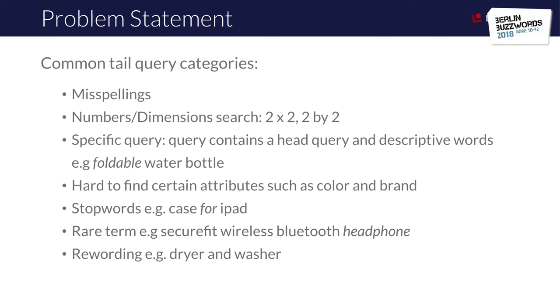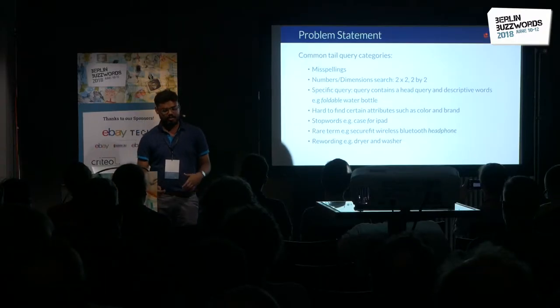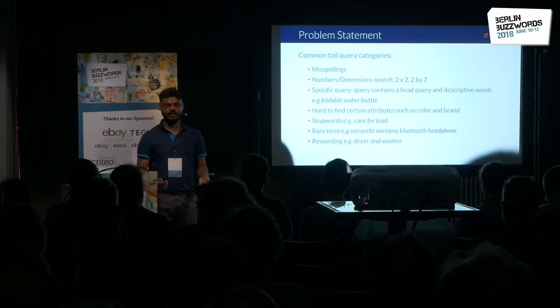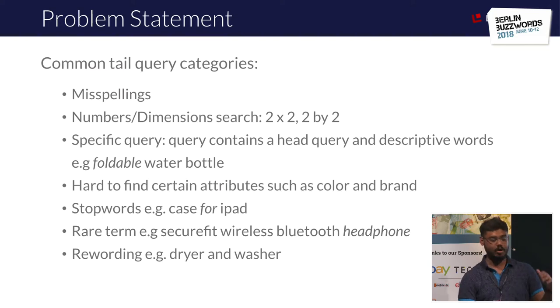Let's broadly classify poor-performing queries. First, misspellings: depending on where a user hails from and how they pronounce a word, they tend to spell it differently. Even content creators or sellers listing products on an e-commerce platform may misspell a term. Second, numbers or dimension searches: a product described as '2 x 2' may not surface when a user searches '2 by 2.' Third, popular queries with adjectives — like 'foldable water bottle' — may rank poorly if the adjective appears infrequently in document descriptions.